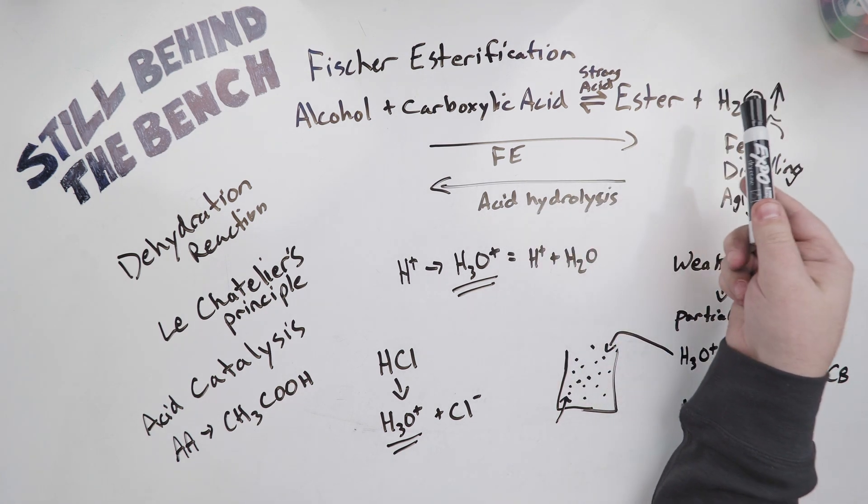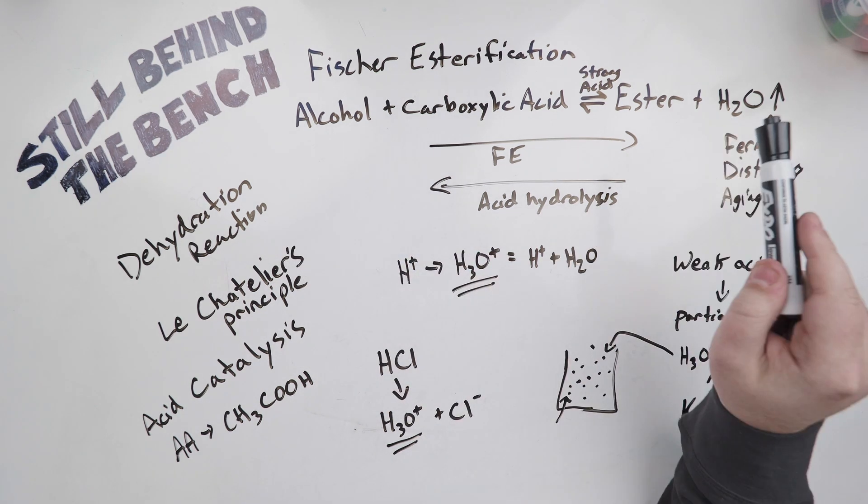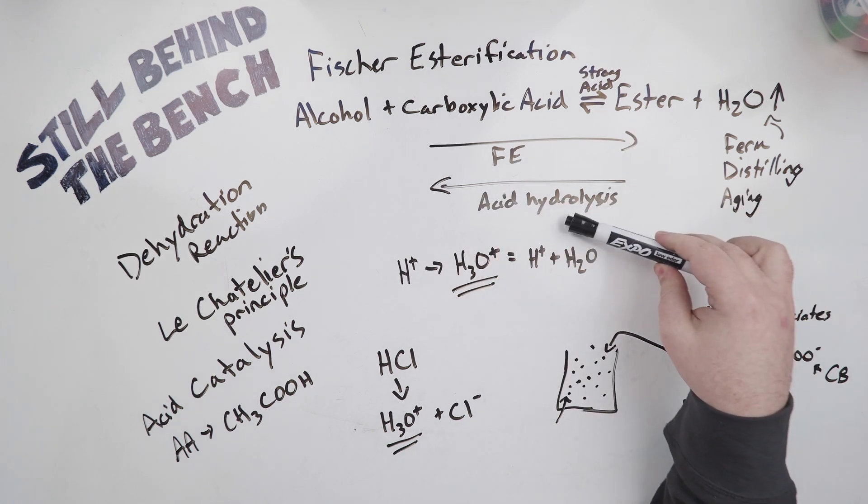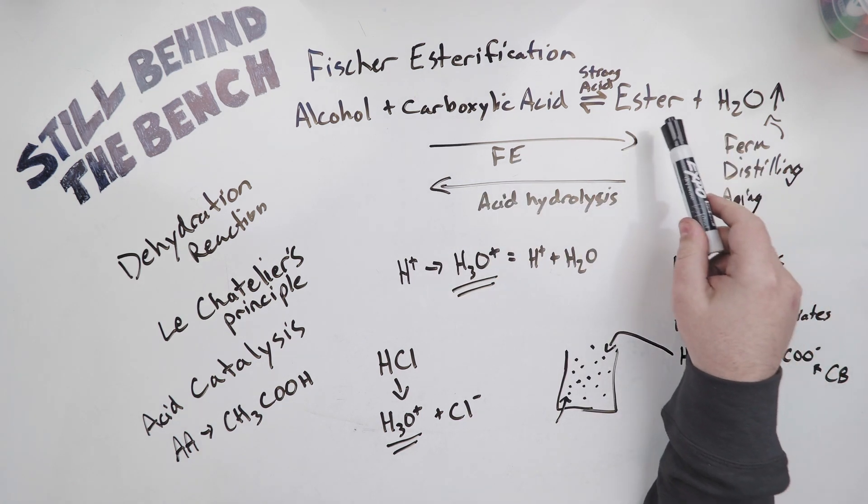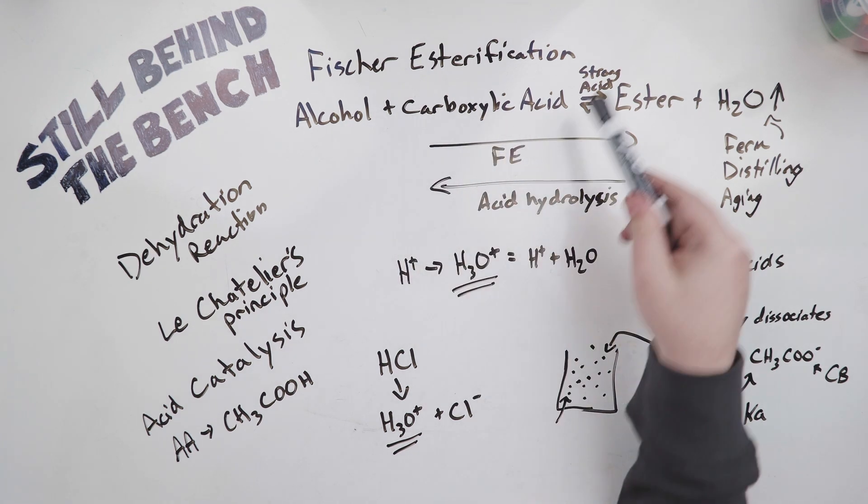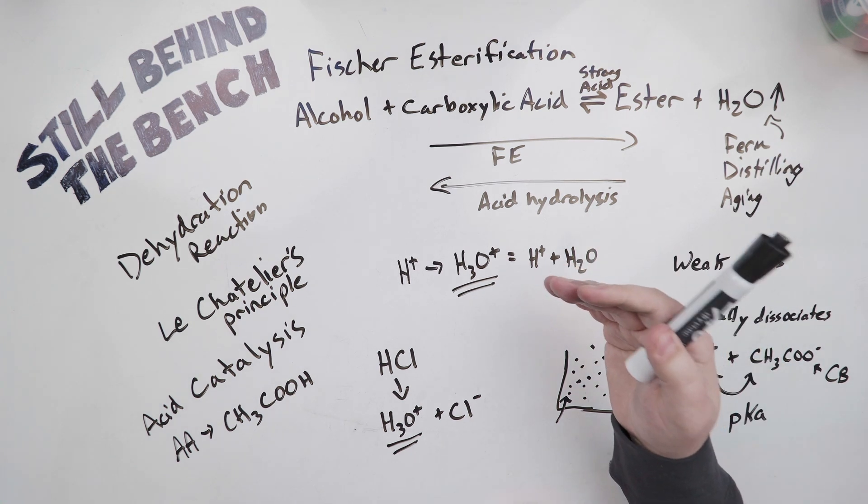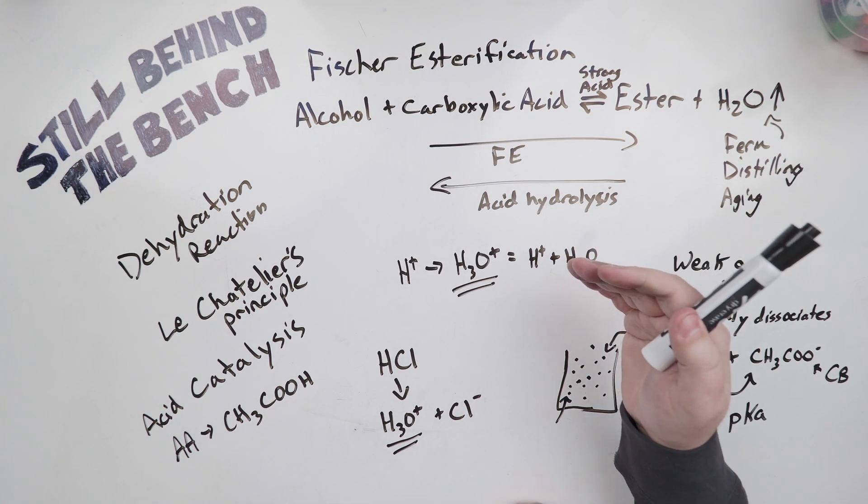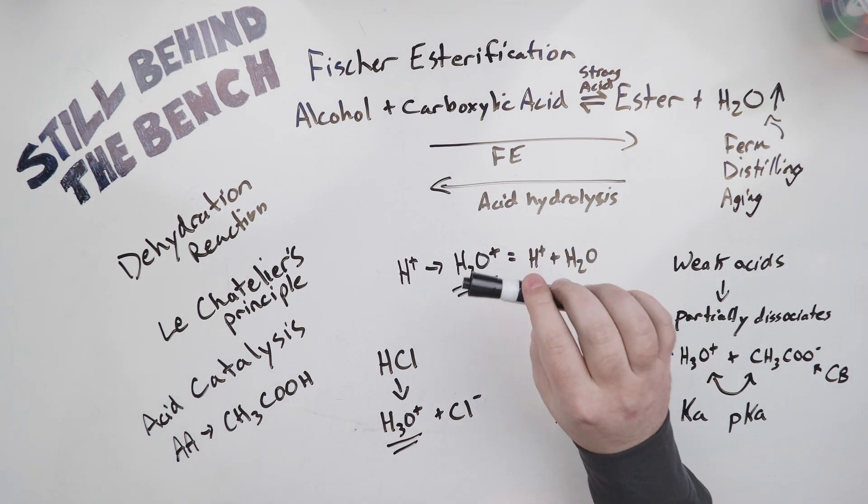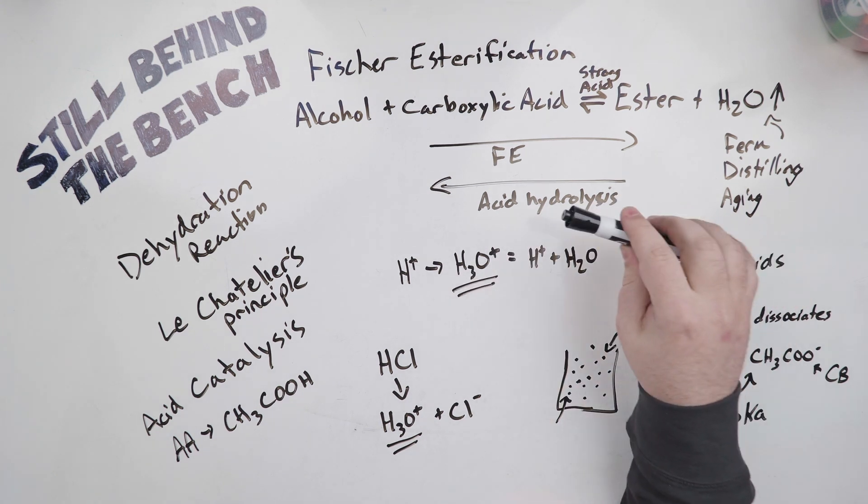This is why it's also technically called a dehydration reaction because you're removing water. The opposite to Fischer esterification is called acid hydrolysis - turning an ester and water back into a carboxylic acid and an alcohol in the presence of a strong acid catalyst. But there are two principles in chemistry that make the quantity of esters produced via this reaction all but negligible over the time periods we're dealing with in the conditions that we're dealing with them.